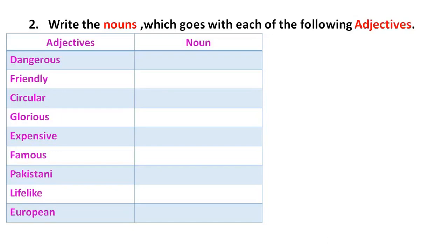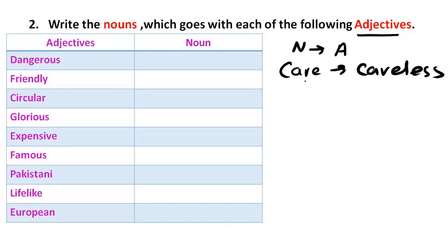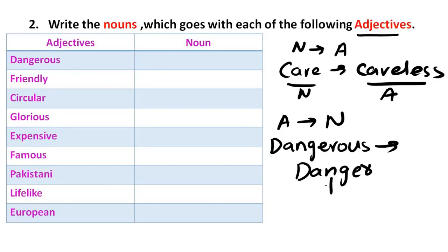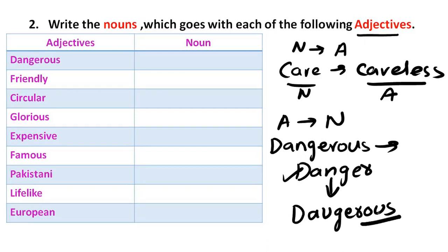Now the next question: we have to convert adjectives to nouns. If we have to convert an adjective to a noun, we remove or change the adjective ending. For example, the word 'dangerous' — if we convert this adjective to a noun, we add or remove suffixes.